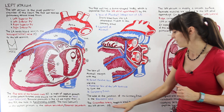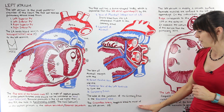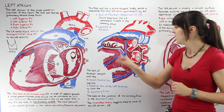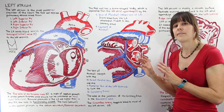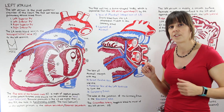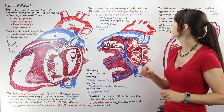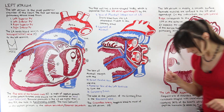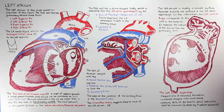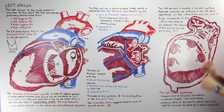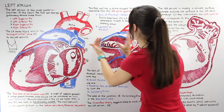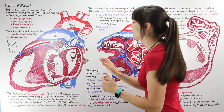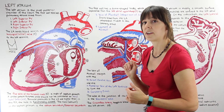The circumflex artery supplies blood to most of the left atrium — shown as the red vessel here. This is the vessel that provides oxygenated blood to the left atrium. Continuing on, the left atrium is mostly a smooth surface.